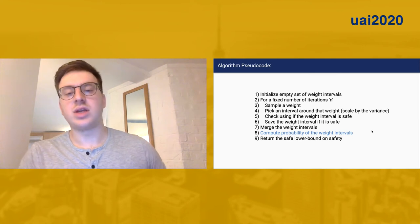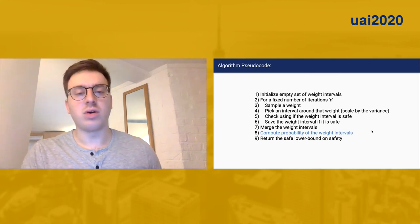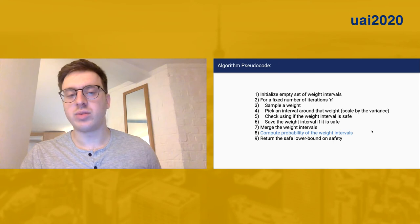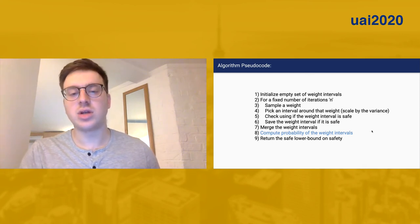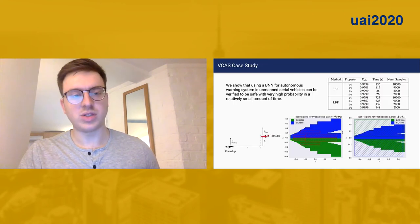We'll merge these safe weights and compute the probability of all the safe weight intervals that we've computed. This is an important step, and there are several ways you can do this. In the paper, we give an explicit formulation for how to do this if you have a diagonal covariance Gaussian. But in general, you could use a Monte Carlo estimate of this value.